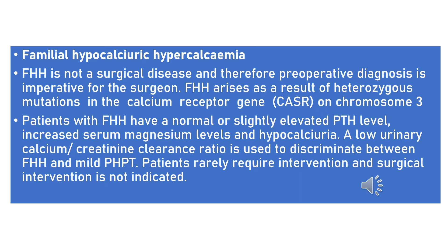Finally, familial hypocalciuric hypercalcemia — it is not a surgical disease, and therefore preoperative diagnosis is imperative for the surgeon. It arises as a result of heterozygous mutation in the calcium receptor gene on chromosome 3. Patients with this condition have a normal or slightly elevated parathyroid hormone, increased serum magnesium level, and hypocalciuria. A low urinary calcium-creatinine clearance ratio is used to discriminate between this condition and mild primary hyperparathyroidism. Patients rarely require intervention and surgical intervention is not indicated.